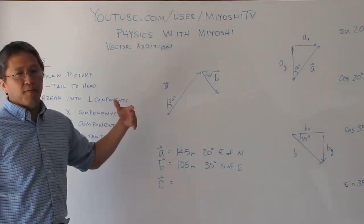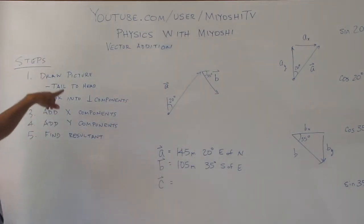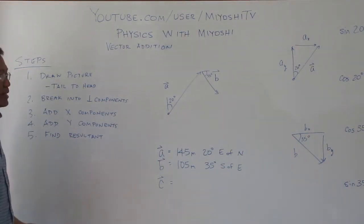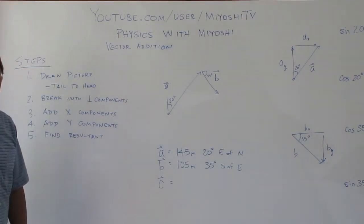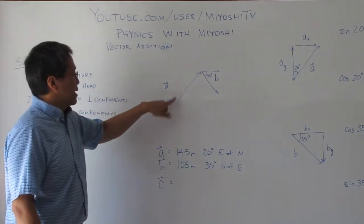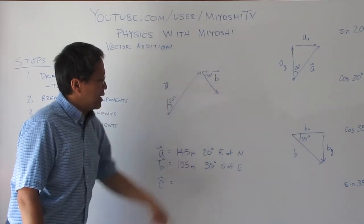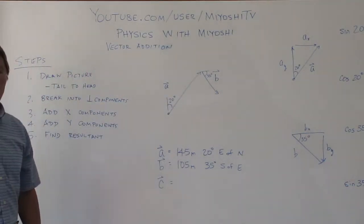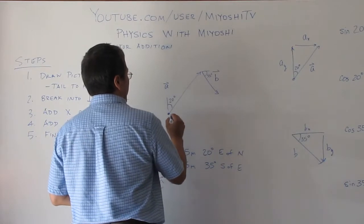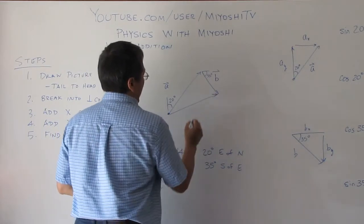The first thing you have to do is learn the steps, and the steps in the case of vector addition are really the same that you would have in many problem solving. Draw a picture. Remember to put your tail to head, tail to head as you are drawing your picture. And then remember your resultant always goes from the very first tail to the very last head. So my C in this case will be there.